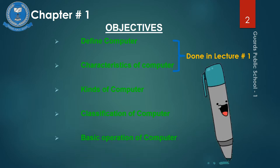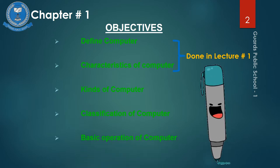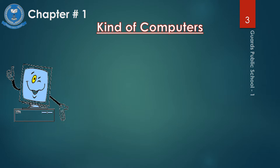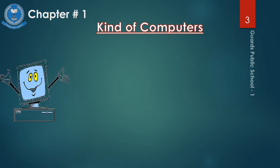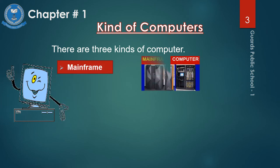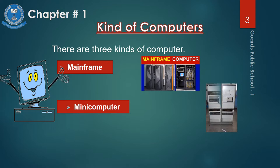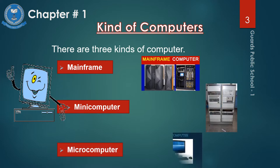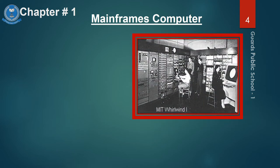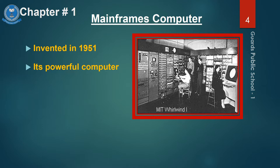In this lecture, in this slide, we talk about kinds of computer. There are three kinds of computer: mainframe, minicomputer, and microcomputer. Now let's move on to mainframe computer. The main points of mainframe: invented in 1951, it is a powerful computer with large storage capacity, and it is expensive.